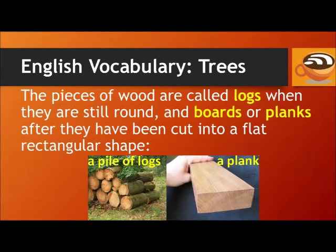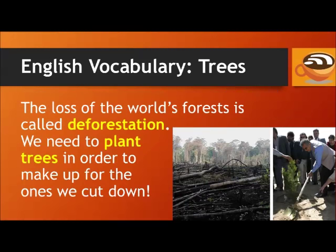The pieces of wood are called logs when they are still round, and boards or planks after they have been cut into a flat rectangular shape. The loss of the world's forests is called deforestation. We need to plant trees in order to make up for the ones we cut down.